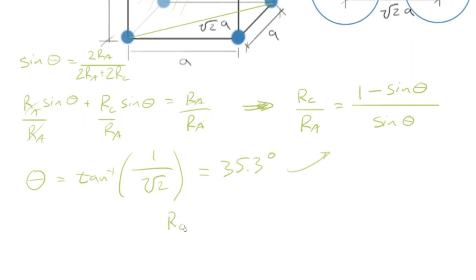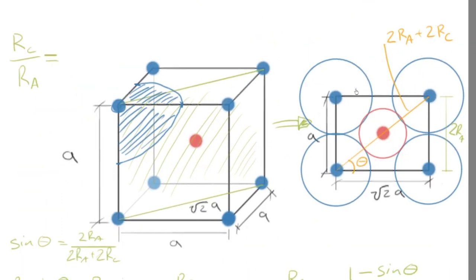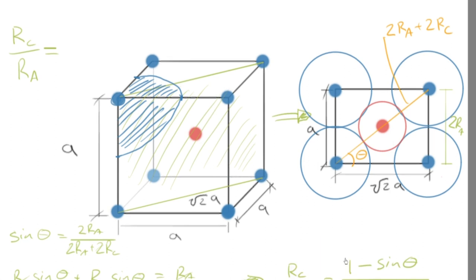we have RC over RA for the simple cubic site, equal to, what did we think it was going to be? Actually, we thought it was going to be close to 75%, right? That's what we thought it should be.